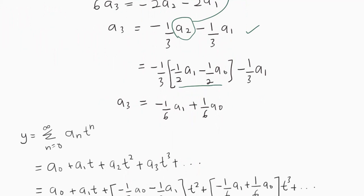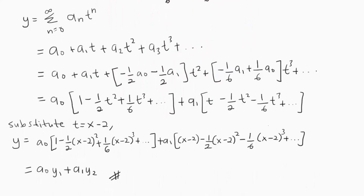For the power series solution, expanding y = Σ aₙ tⁿ gives y = a₀ + a₁t + a₂t² + a₃t³ + .... Substituting the derived expressions for a₂ and a₃, then factorizing by a₀ and a₁, and finally substituting back t = x - 2, we get: y = a₀[1 - ½(x-2)² + ⅙(x-2)³ + ...] + a₁[(x-2) + ...] and so on.